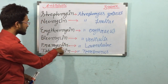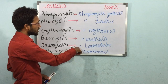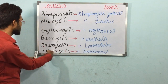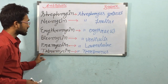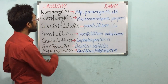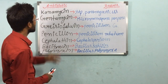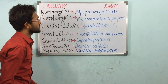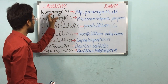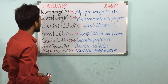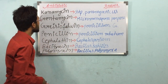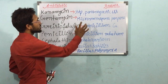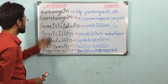For Kanamycin, the microorganism is Streptomyces kanamyceticus. And for Sisomicin, the source is Micromonospora purpurea. So these are the microorganisms for these antibiotics and we can obtain these antibiotics from these sources.